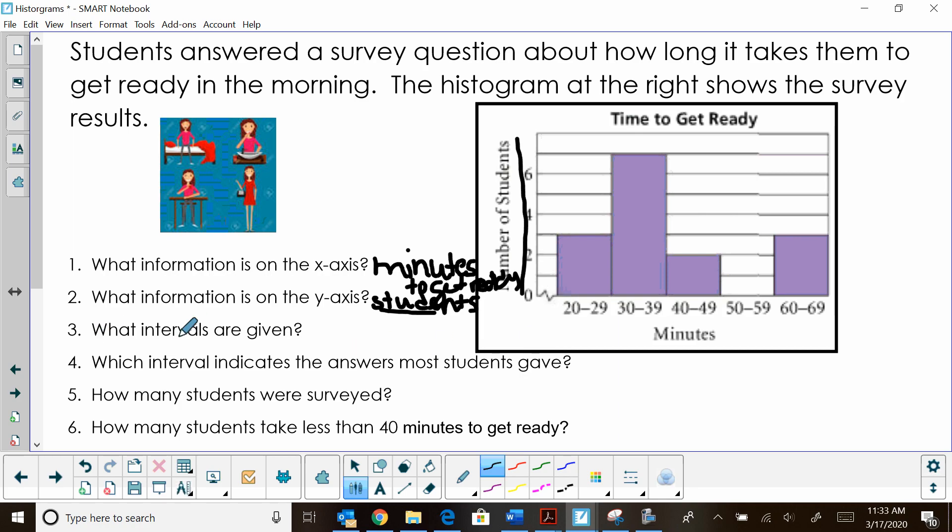Question three, what intervals are given? Okay, so on a histogram, you're not going to have, well, it took me 21 minutes to get ready. It's an interval, and in this case, from 20 to 29 minutes. So they're in 10 minute intervals: 30 to 40 minutes, 40 to 50 minutes, 50 to 60 minutes, and 60 to 69 or 70 minutes. So you've got these intervals of 10 minutes. So what are the intervals? They are in 10-minute intervals.